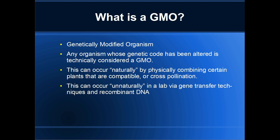GMO literally stands for genetically modified organism. Any organism whose genetic code has been altered is technically considered a GMO. This can occur in one of two ways — naturally and unnaturally. Ways to naturally alter DNA are by crossbreeding plants via cross-pollination, or you physically combine two plants that are genetically compatible. You can also do this unnaturally in a lab.